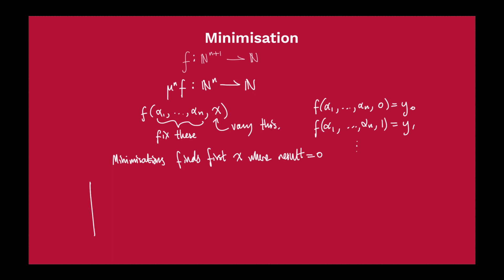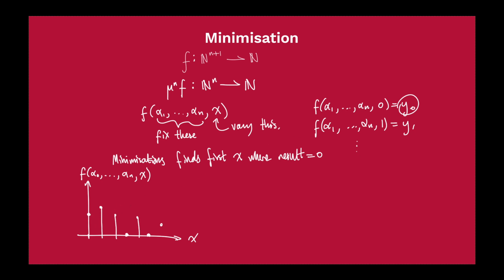Let's look at an example. On one axis we have f(α₁, …, αₙ, x) and the x-axis is just x. The results might look something like this — going to 0 at some point, then up again, then another 0. The result corresponding to y₀ is when the final input is 0, incrementing after that. Minimization is going to find this first value of x where the result goes to 0.